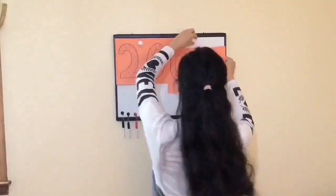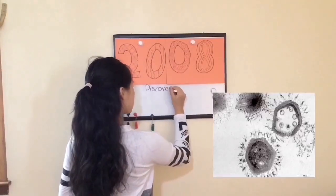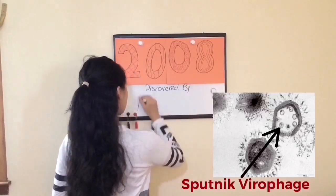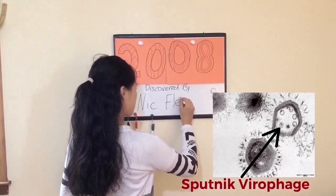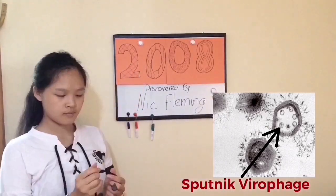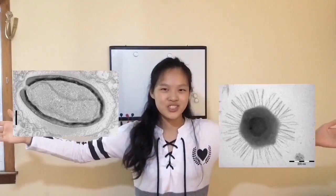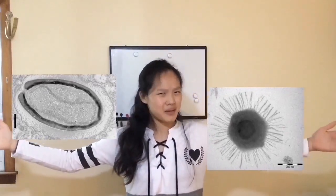In 2008, we discovered the existence of the first Sputnik virophage — a virus that infects other viruses. These virophages infect giant viruses such as Mimi viruses or Pandora viruses, which are huge, at least compared to all things microscopic.